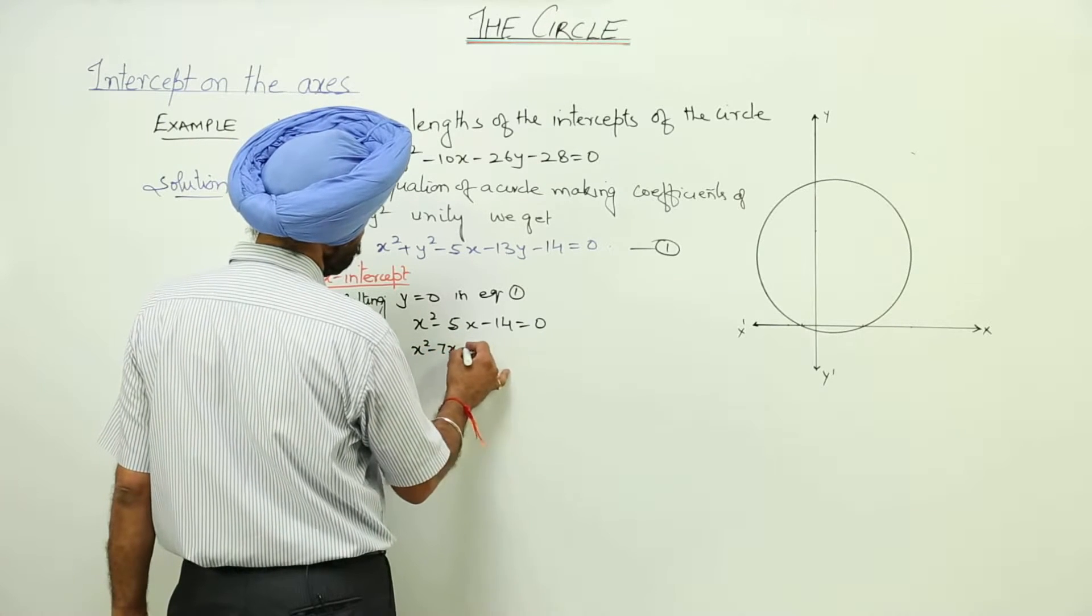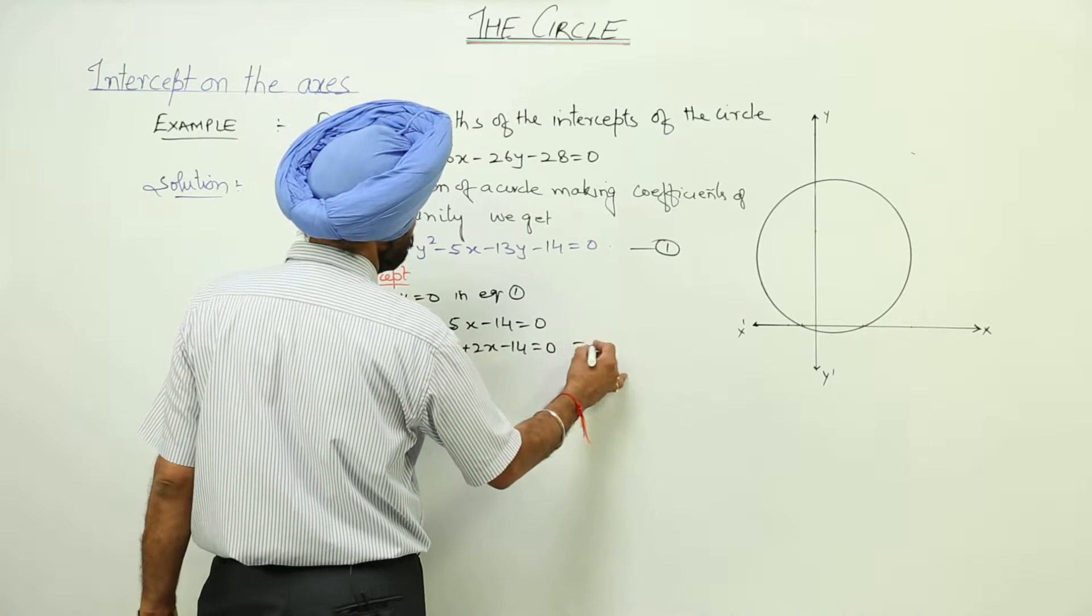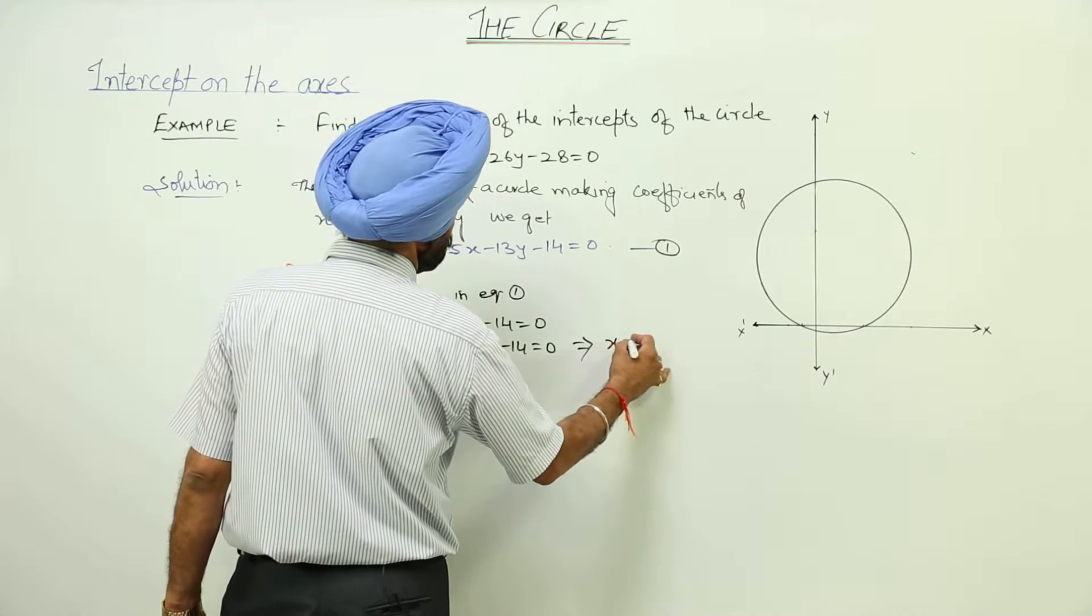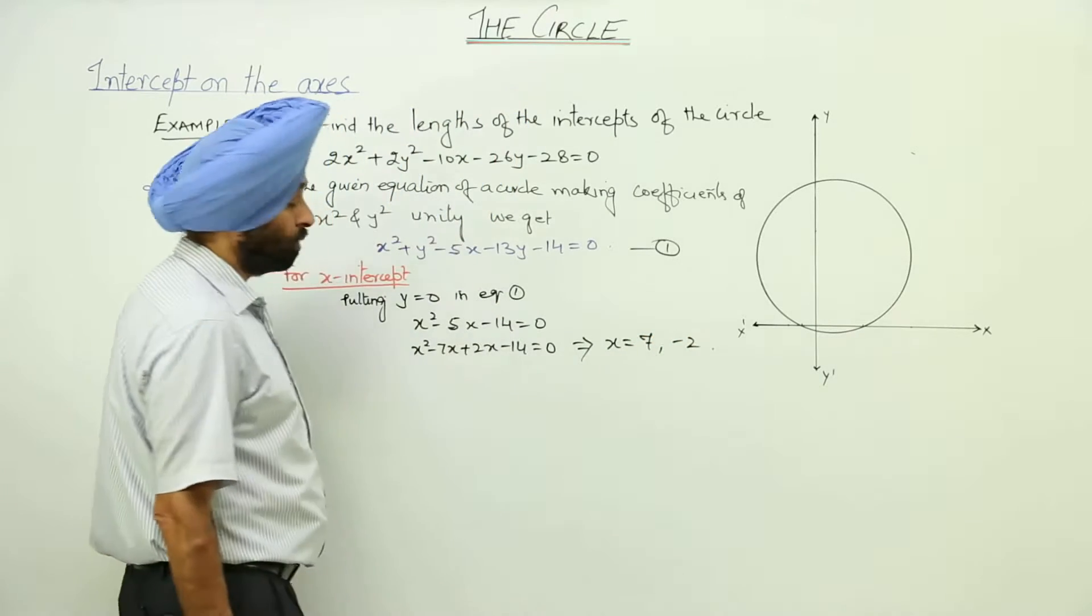x square minus 7x plus 2x minus 14 is equal to 0, and here we are having x is equal to 7, comma minus 2 on solving.